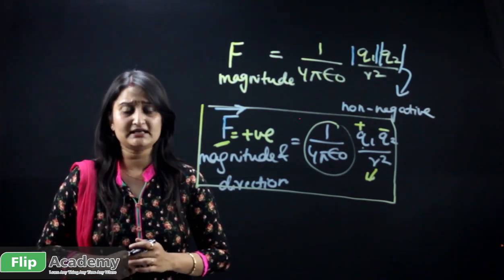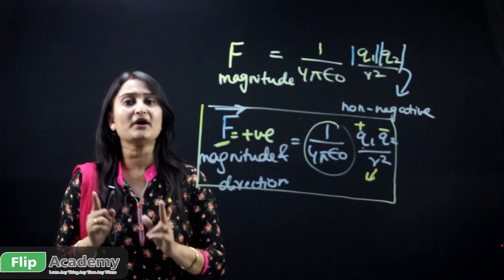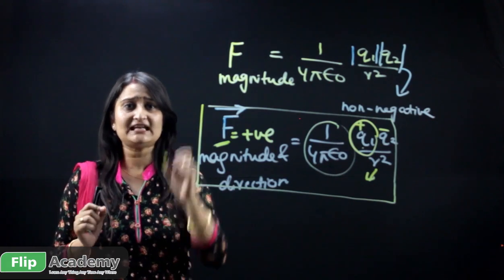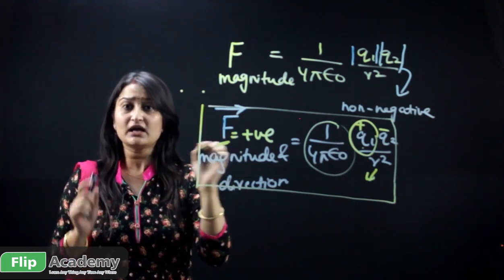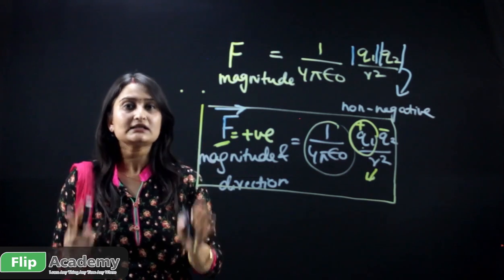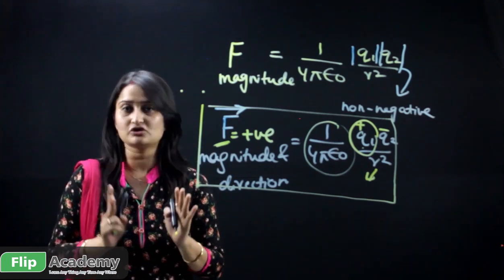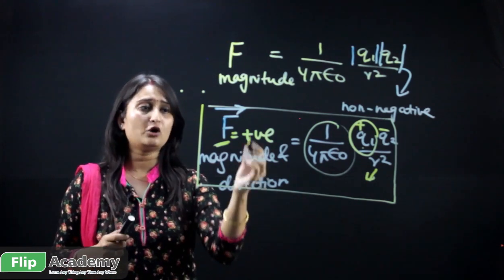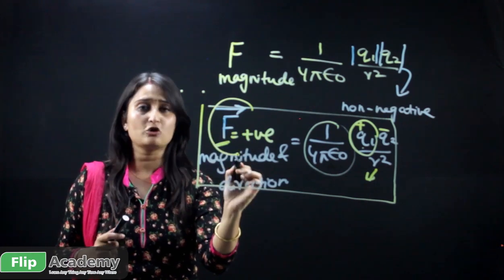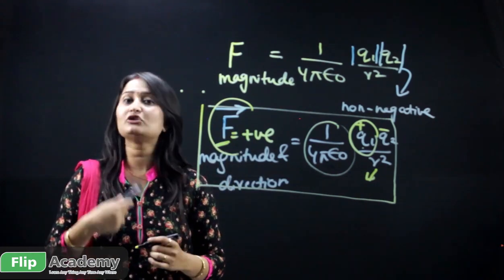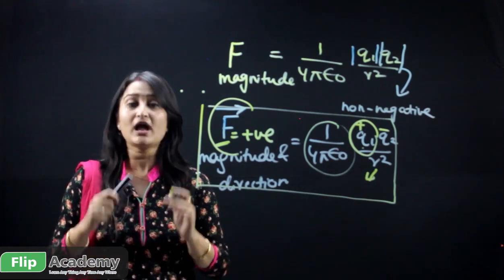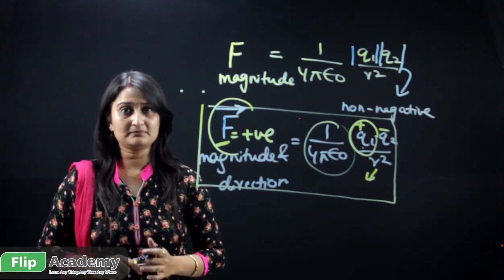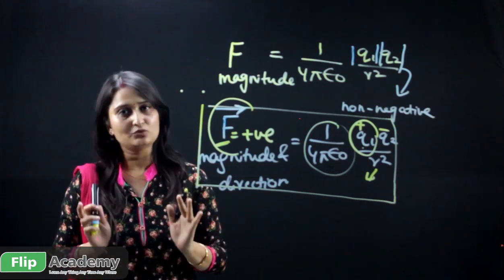The third important point is that the charges must be point charges — Coulomb's law is applicable only for point charges, not considering dimensions of Q1 and Q2. The fourth point is that Coulomb's law gives a vector quantity — it gives both magnitude and direction. These are the important points to consider after studying Coulomb's law.